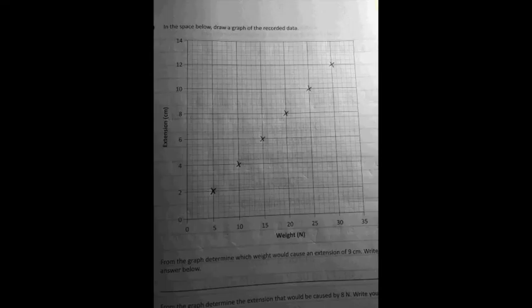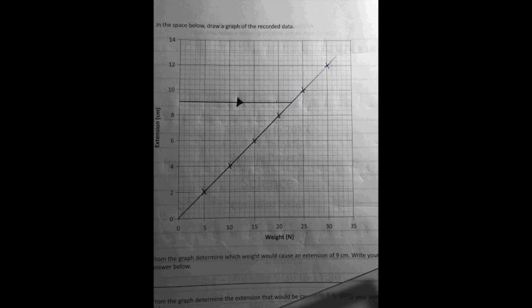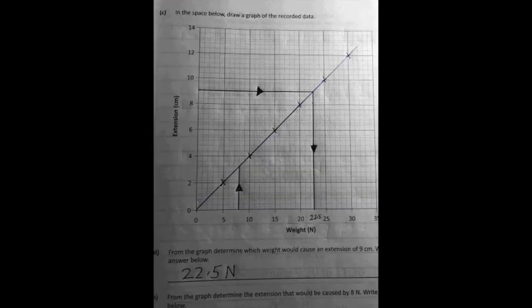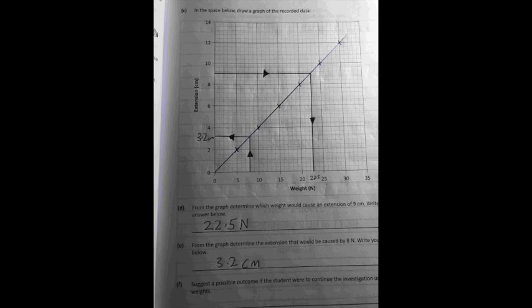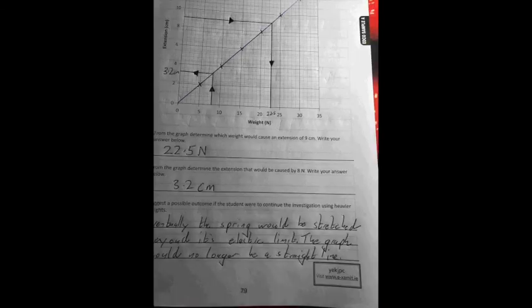First things first here just plot the points and then join them up. Finally they're looking for an extension of nine centimeters so go across from the nine centimeter extension and then down and read off the weight value which is 22.5. The second part what extension would be caused by eight newtons? Well this time you go up from eight newtons and read it off across, it's a little harder to see here but it's about 3.2 centimeters and don't forget units each time.